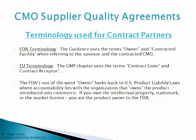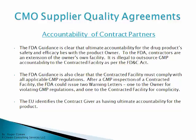The FDA's use of the word 'owner' goes back to U.S. product liability laws — the accountability lies with the organization that actually owns the product introduced into commerce. So if you own the intellectual property, the trademark, or the market license for the drug, you are the product owner to the FDA. The FDA guidance is clear that the ultimate accountability for the drug product's safety and efficacy lies with the product owner. The contractors are considered an extension of the owner's own facility, and it is illegal to outsource GMP accountability to the contracted facility, as laid out in the FD&C Act.